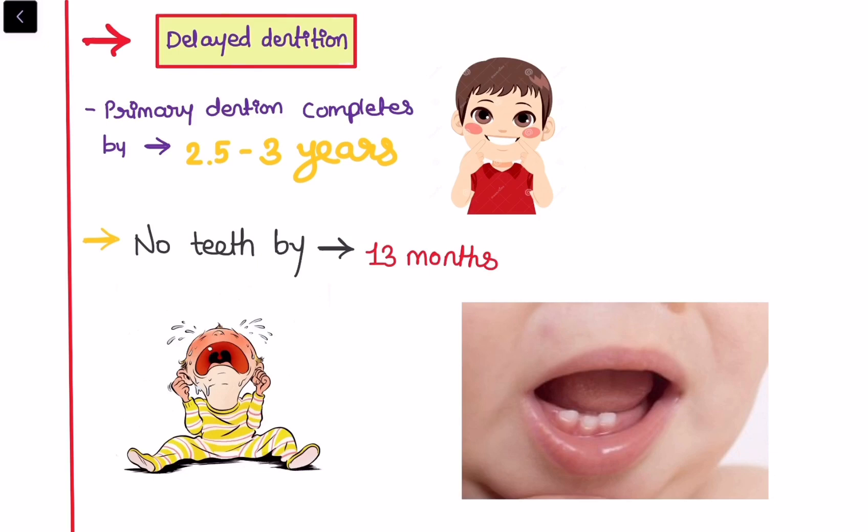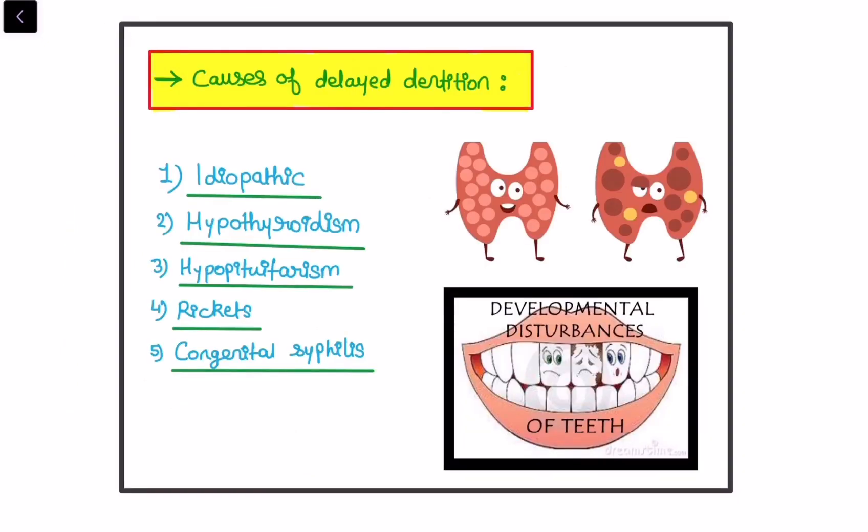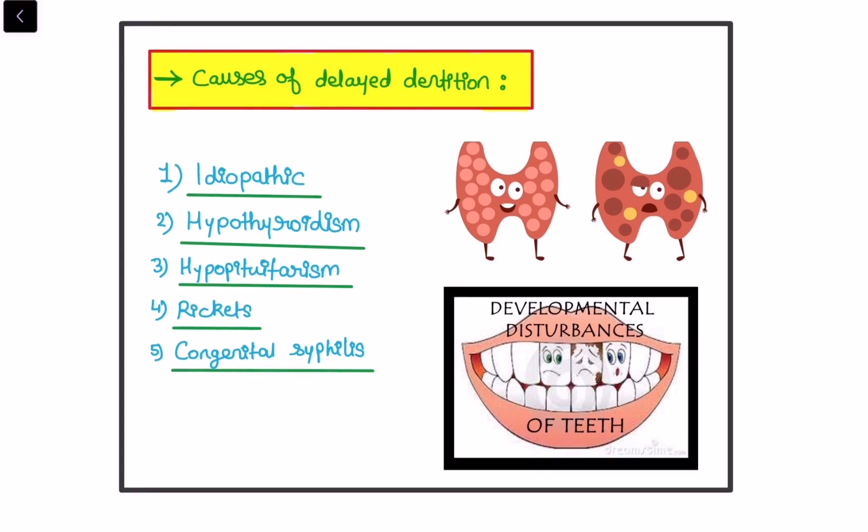Now, we will be studying delayed dentition. What does that mean? Normally primary dentition completes by the age of 2 and a half to 3 years. But if there are no teeth by the age of 13 months, it will be called as delayed dentition. Delayed dentition happens because of many reasons but most of them are idiopathic. Now the causes of delayed dentition. There are various causes of delayed dentition but most of them are idiopathic. Medical science yet does not know what are the causes of delayed dentition, but the main causes may be hypothyroidism, hypopituitarism, rickets and congenital syphilis. These are the causes that may contribute to the delayed dentition.